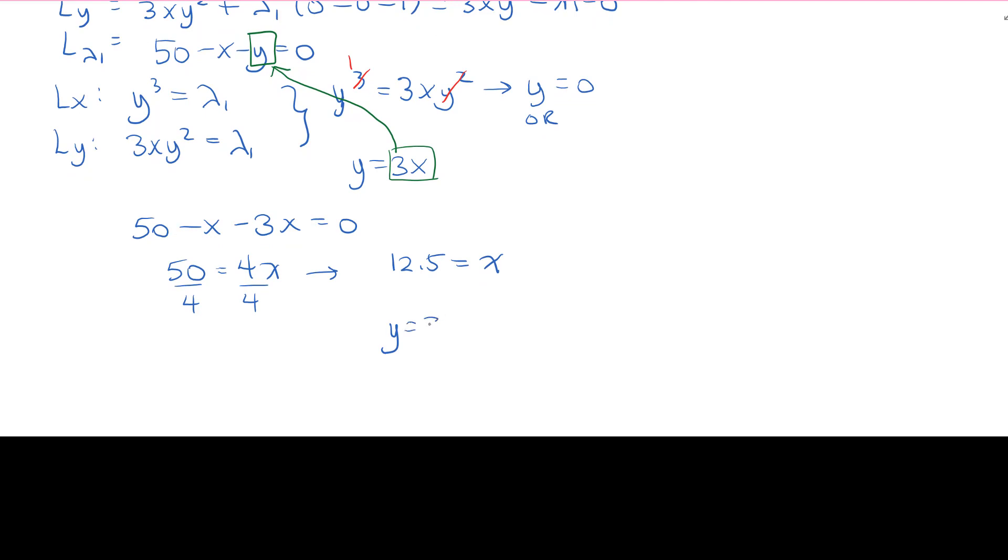That means that y is 3 times that amount, so that gives us 37.5.